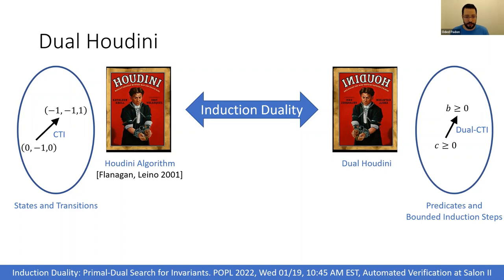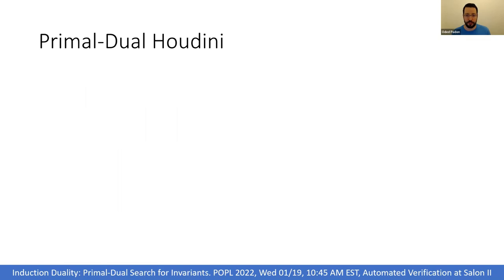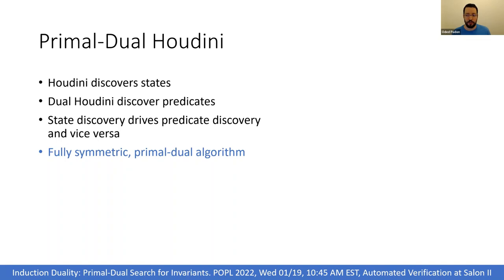By combining Houdini and dual Houdini, we obtain primal-dual Houdini. We use Houdini to discover states and then feed those states to dual Houdini, which discovers new predicates, which we then feed back to Houdini to discover more new states and so on. The result is a primal-dual invariant inference algorithm which is fully symmetric across both sides of the induction duality and where state discovery drives predicate discovery and vice versa.